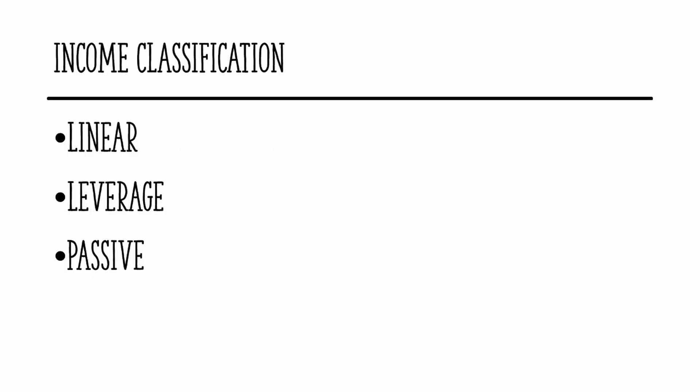Income can be classified in three categories: one, linear income; the second is leverage income; and the third is passive income, or passive residual income.